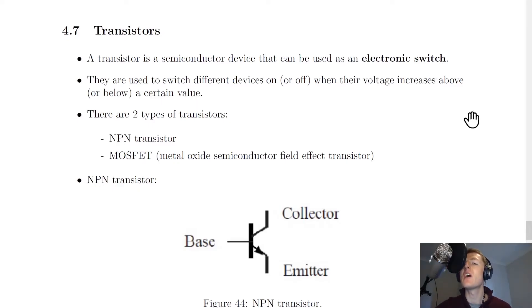It's important to remember that it's a switch. How does it work as a switch? Well, it doesn't have any physical parts to turn on or off, but the way you can turn a transistor on and off is to apply a voltage across it. They are used to switch different devices on or off when their voltage increases above or below a certain value.